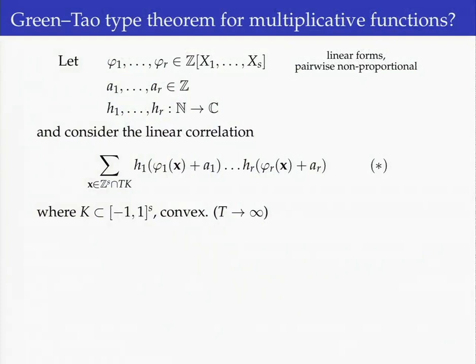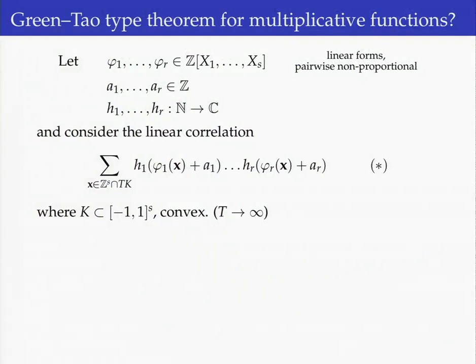We sum these products over a lattice point in an expanding region t times K, where t is a parameter that we will let tend to infinity, and K is some nice subset of R^s — say, a convex subset of the cube [-1,1]^s. So that is the basic setup.